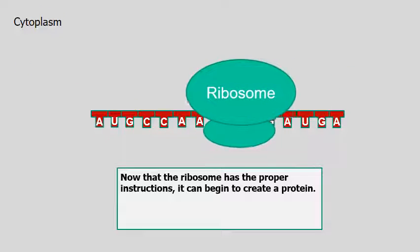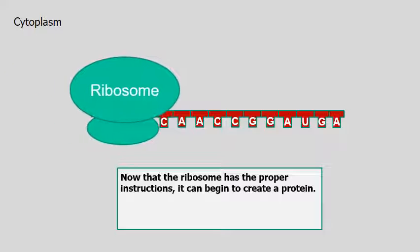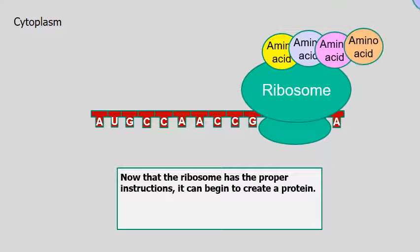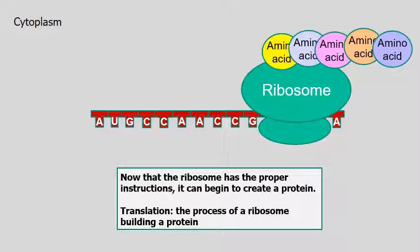The ribosome can start to read the mature messenger RNA. And as it's reading the RNA, the ribosome is going to begin the process known as translation. And it's going to start to collect a bunch of amino acids and link them together. These amino acids will eventually make and form a protein.